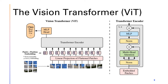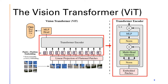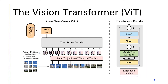Each token is then input into a transformer encoder. The transformer encoder contains a multi-head self-attention layer and a multi-layer perceptron, or MLP layer. Layer normalization is applied before the multi-head attention and MLP layers. There are also residual connections between the input and output of both the multi-head attention and MLP operations, which helps prevent vanishing or exploding gradients. L number of transformer encoders can be stacked. For final classification, the output of the encoder is used as input for an MLP with one hidden layer.